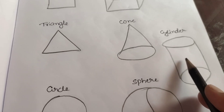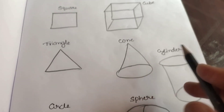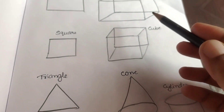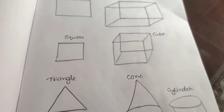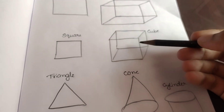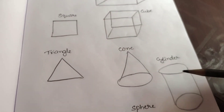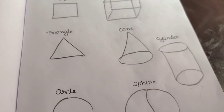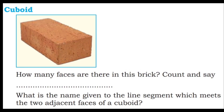In this class we will learn about these solid figures: cuboid, cube, cone, cylinder, and sphere. First one: cuboid.